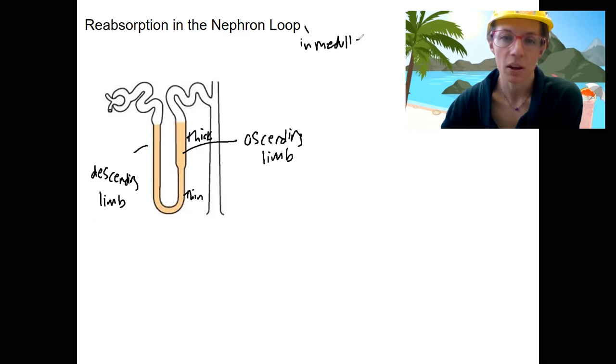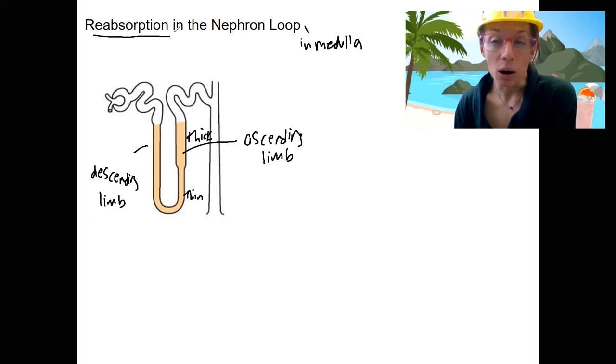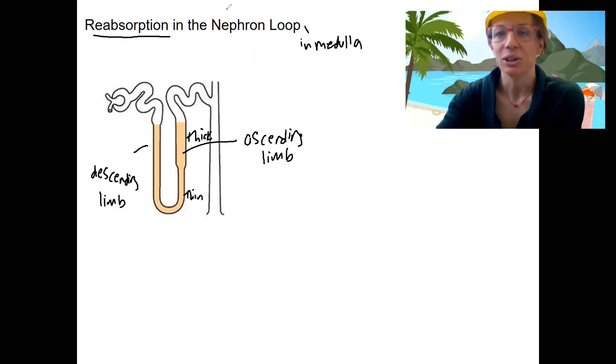We'll see that in just a minute. We're going to have reabsorption. So only things moving out of the nephron loop to where? To the blood. It's going to enter the either vasa recta or peritubular capillaries.